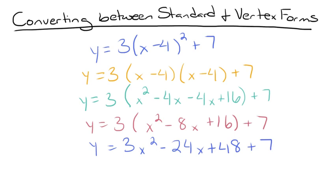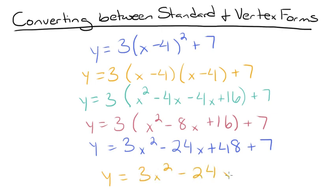Finally we combine like terms to get y equals 3x squared minus 24x plus 55, and there's our equation in standard form.